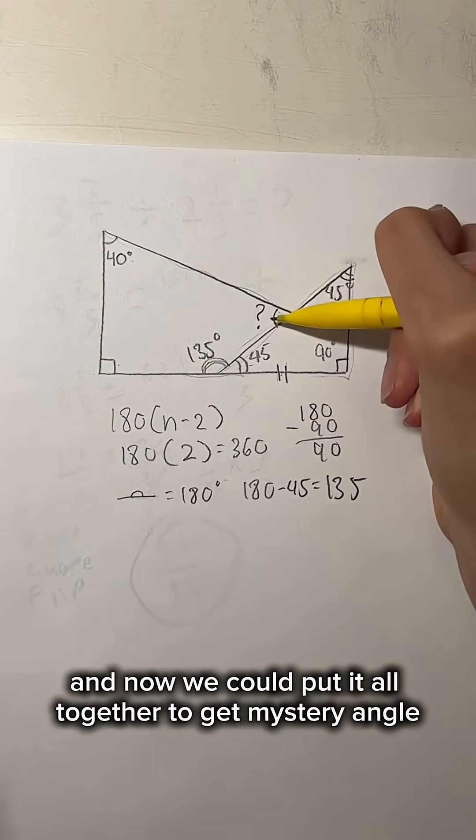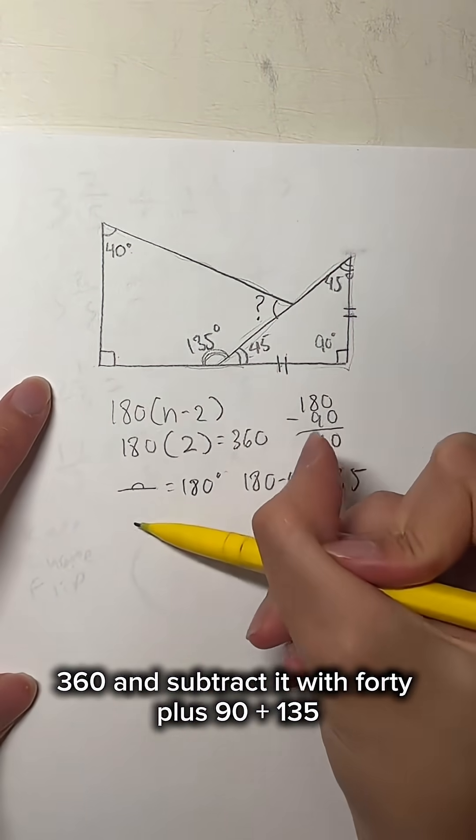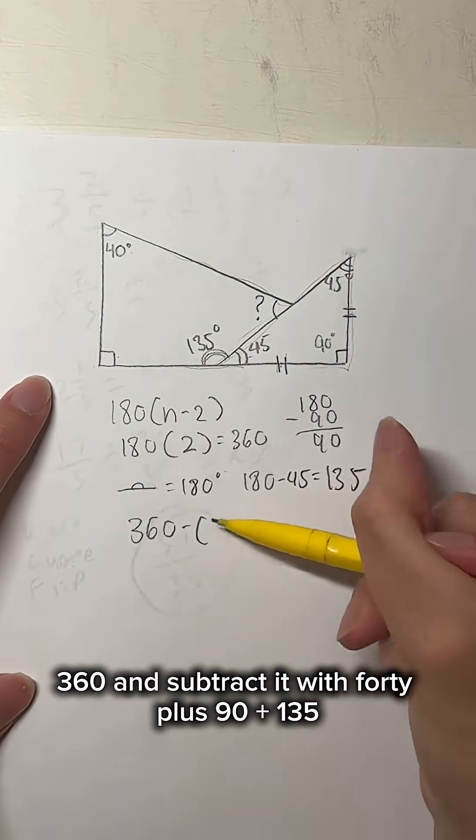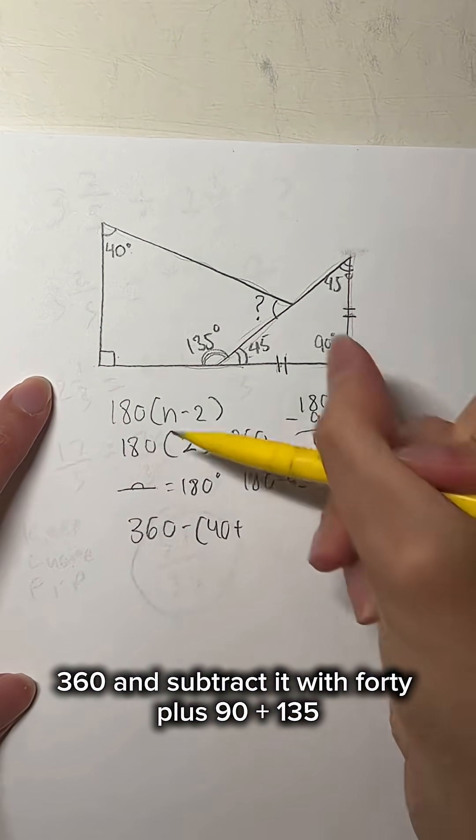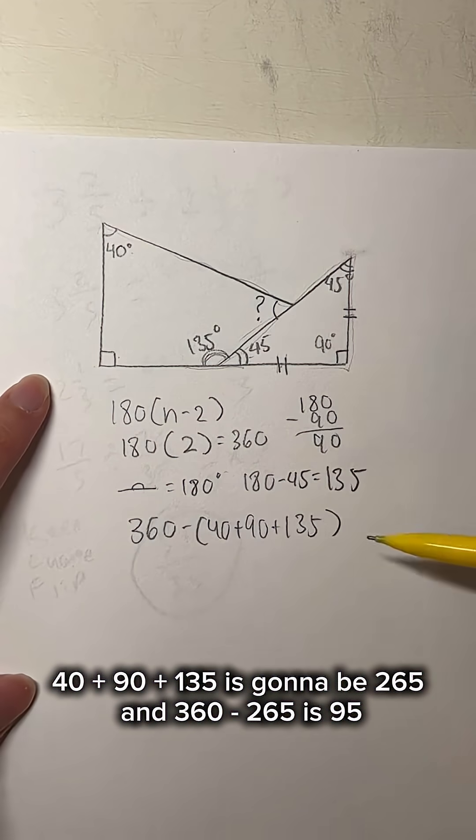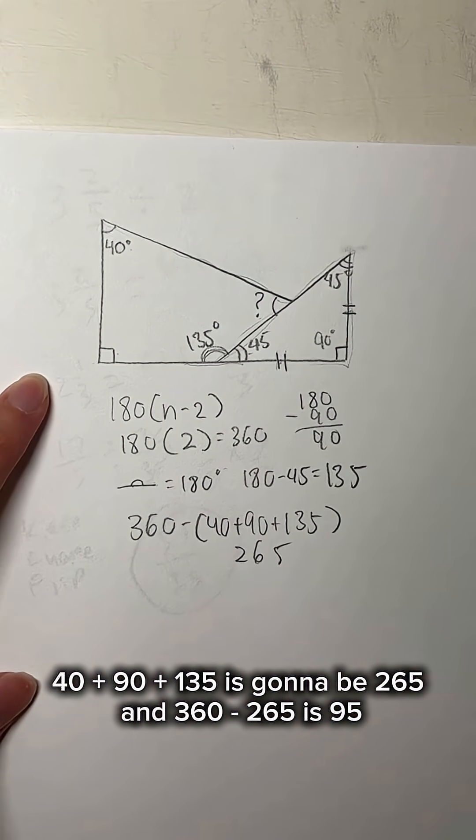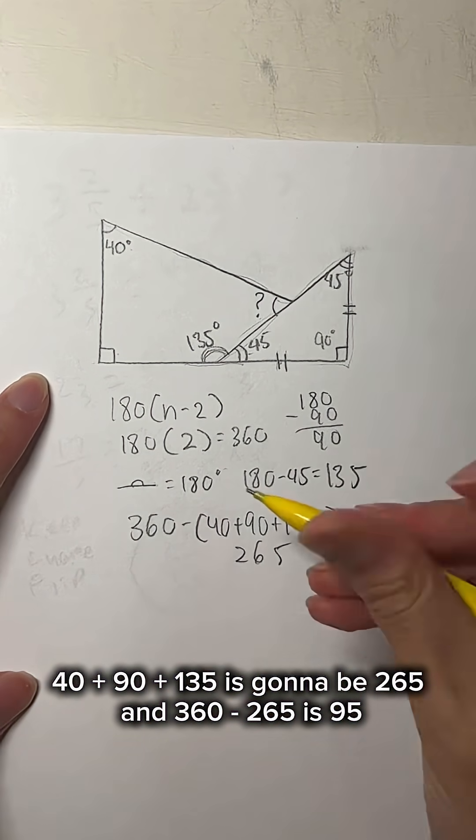And now we could put it all together. To get the mystery angle, we take the total degree measure of the four-sided figure, 360, and subtract it with 40 plus 90 plus 135. 40 plus 90 plus 135 is going to be 265, and 360 minus 265 is 95.